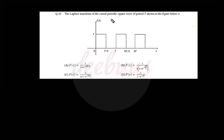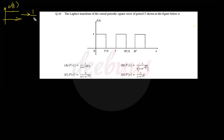A periodic square wave is shown and we have to calculate the Laplace transform of this periodic function. This question may be classified under Signals and Systems or Network Theory. To solve it, I am recollecting some basics: the Laplace transform of u(t) equals 1/s.